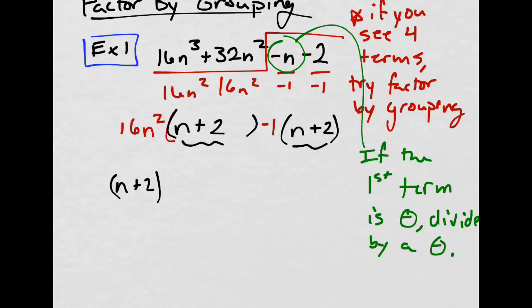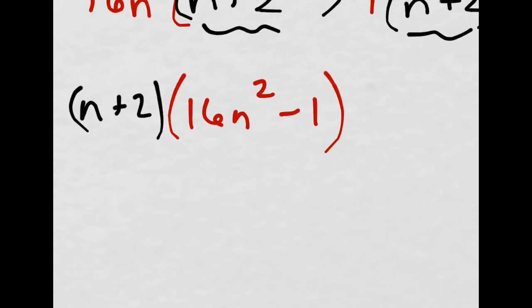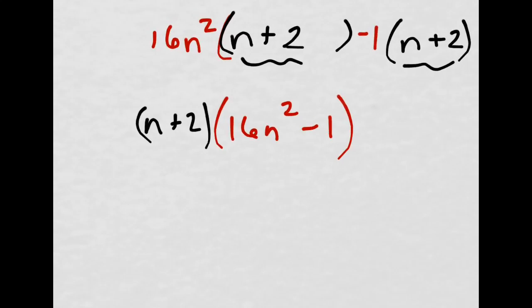Now those are the same, so I factor those out. So n plus 2 times 16n squared minus 1. Oh, look at this. You see this? Can I square root that? Of course, it's 4. Can I square root the n squared? Yeah, that's just regular n. Square root of 1 is 1, so I can square root everything, and this is subtraction.